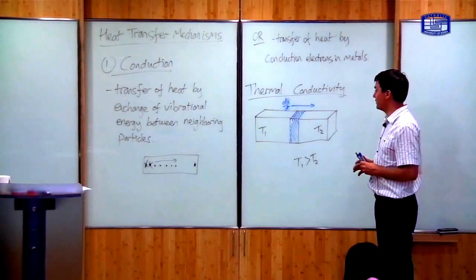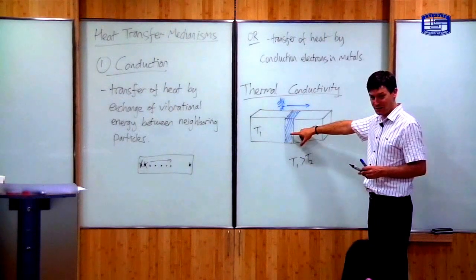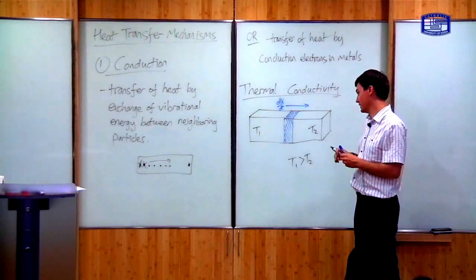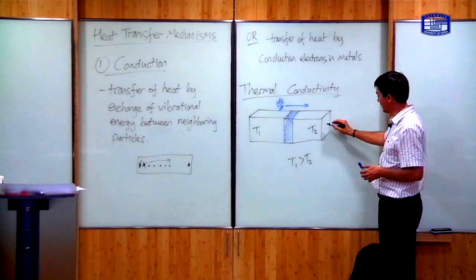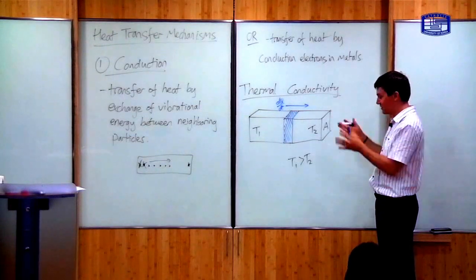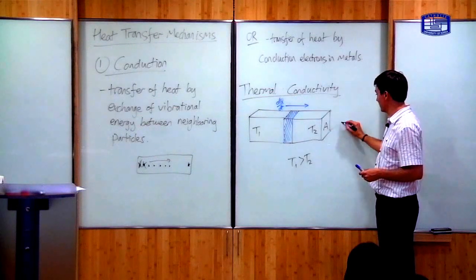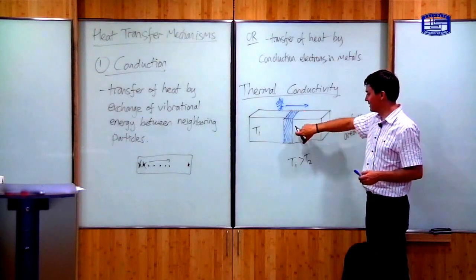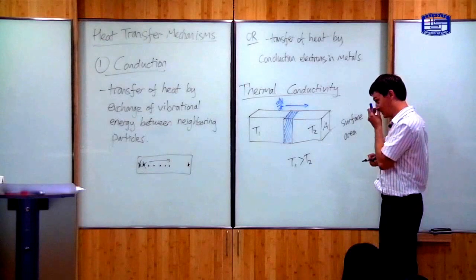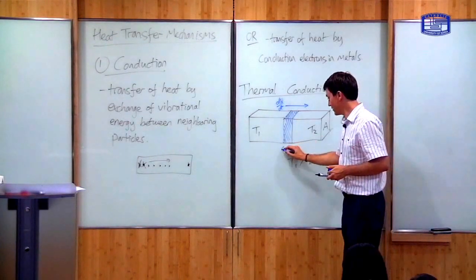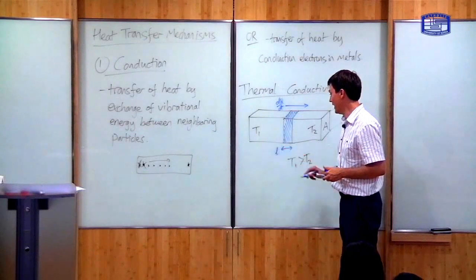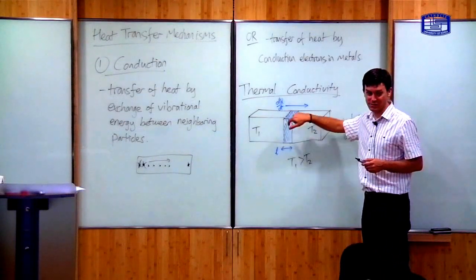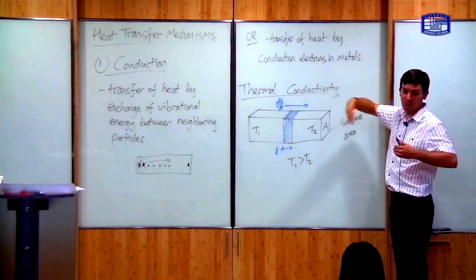The thermal conductivity of this conductor tells you how much heat will be transferred — that is, how big is dQ/dt. It depends upon various things: it depends upon the area A of the connecting surface, and it depends upon the length L of the conductor. Clearly, it also depends upon the difference in temperature between the reservoirs. If I have a bigger difference in temperature, I will get more heat flow.